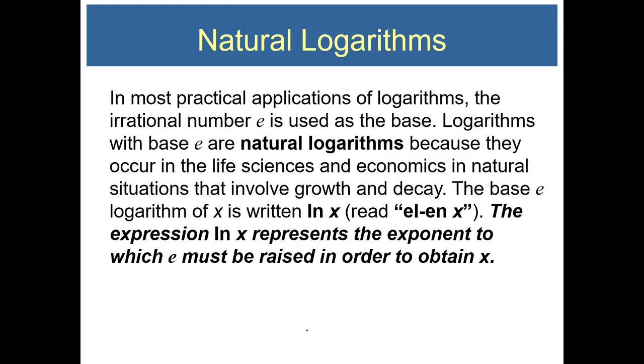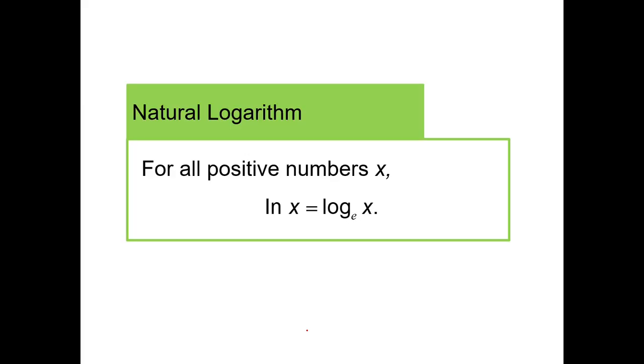In most practical applications of logarithms, the irrational number e is used as the base. Logarithms with base e are natural logarithms because they occur in the life sciences and economics, in natural situations that involve growth and decay. The base e logarithm of x is written as ln x. The natural log of x is equal to log base e of x. We do not write log base e of x.